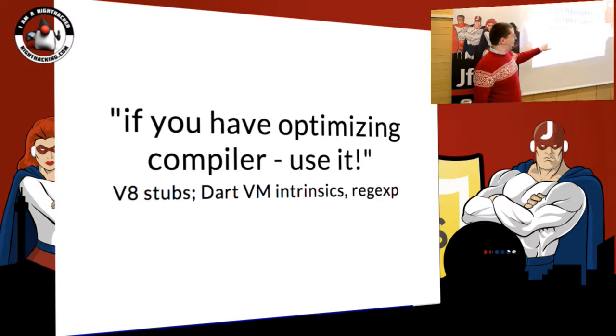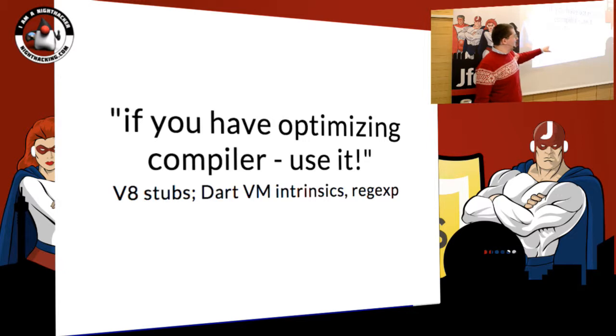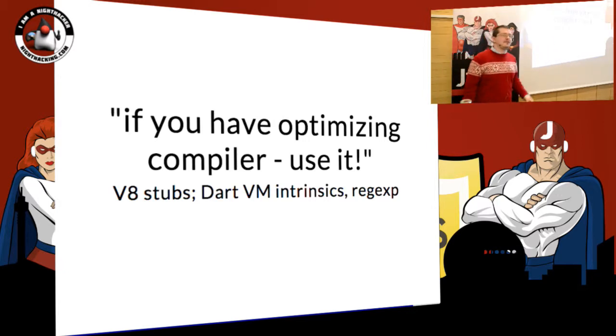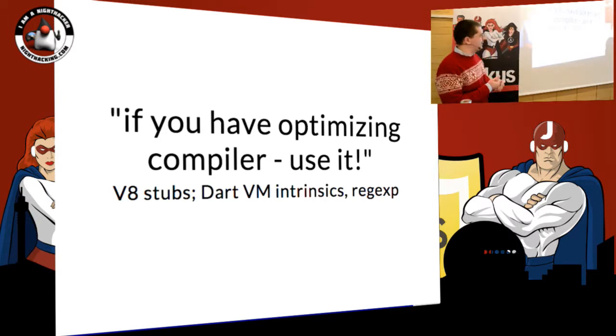In V8, I was telling you about handwritten stubs. These days, the stubs are written in the IR of the optimizing compiler. The Dart VM is the same — we write intrinsics using the IR. We recently ported V8's regexp engine, which is one of the fastest regexp implementations available. It has five or six different hand-coded machine backends for different hardware. When we ported it to Dart VM, we made it emit the optimizing compiler IR instead of machine code, so we don't have to port it.